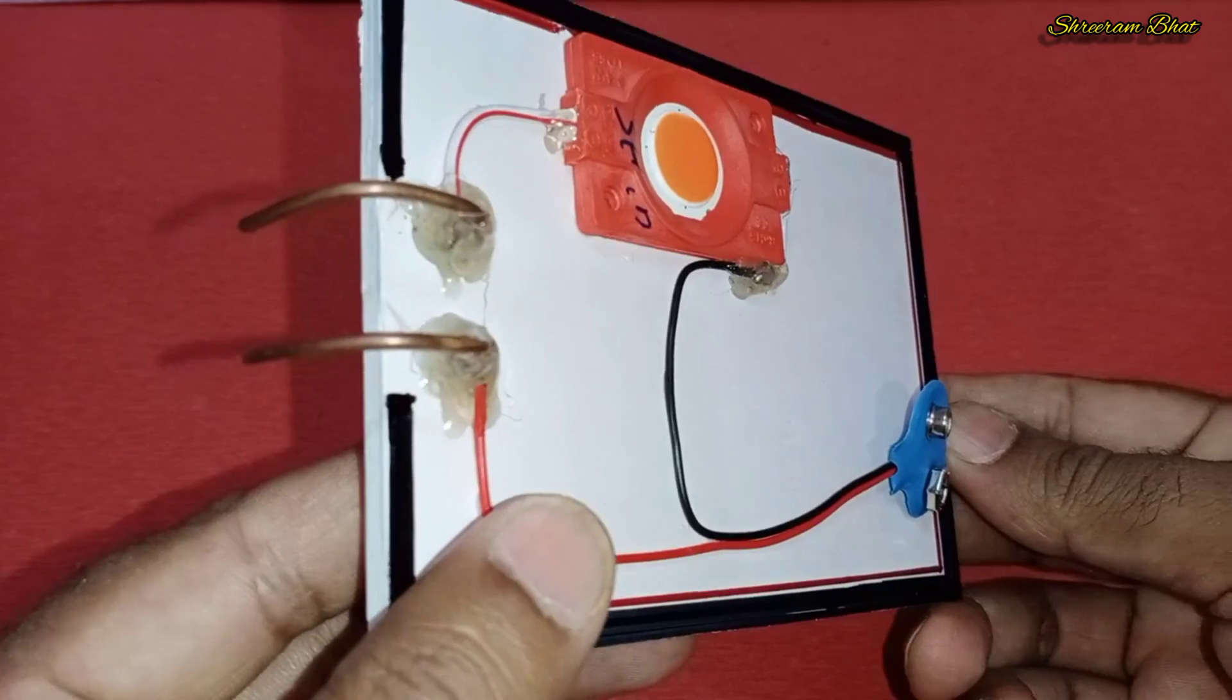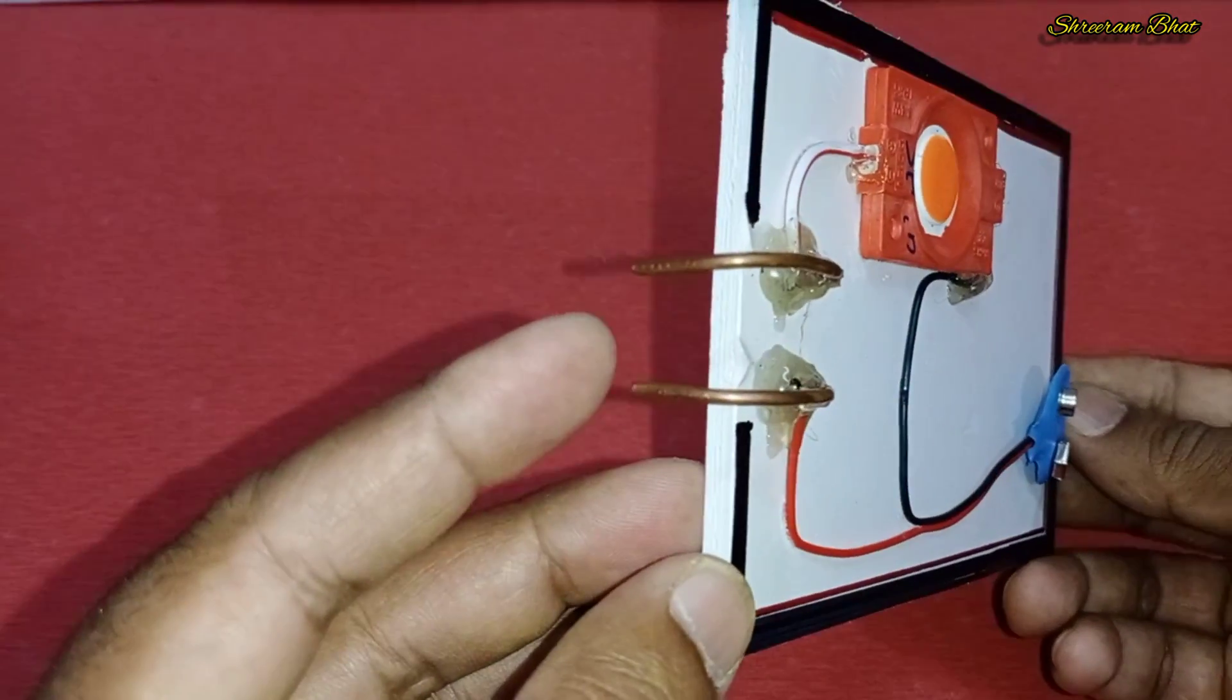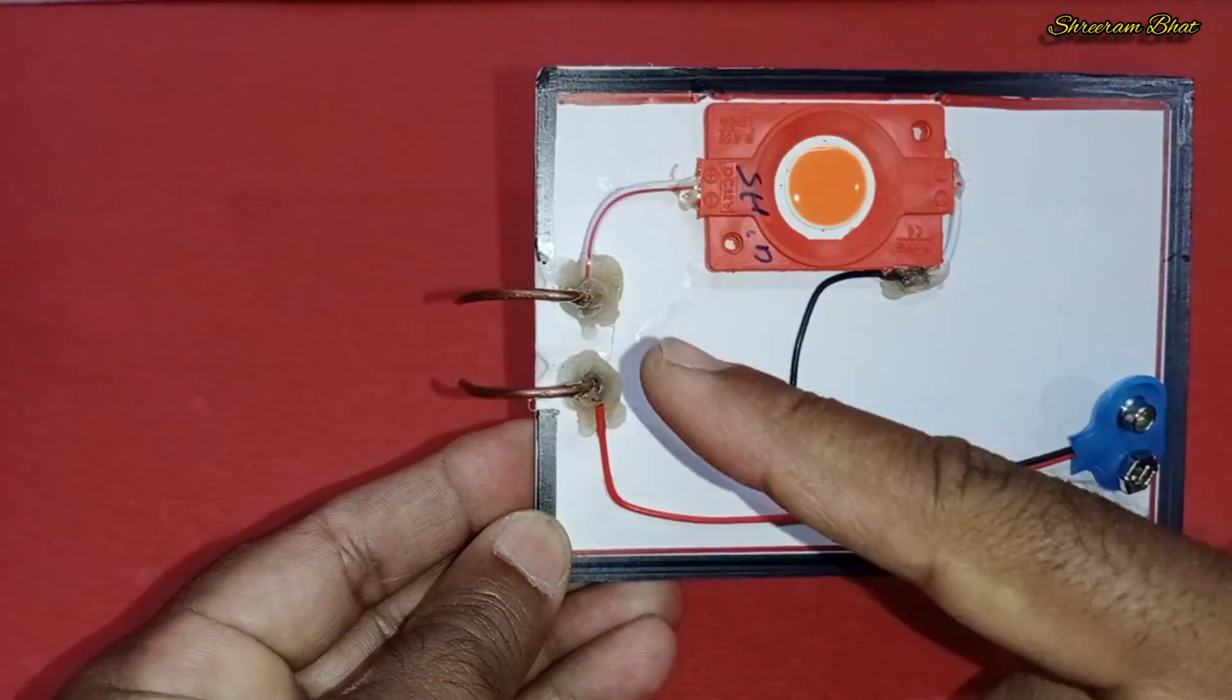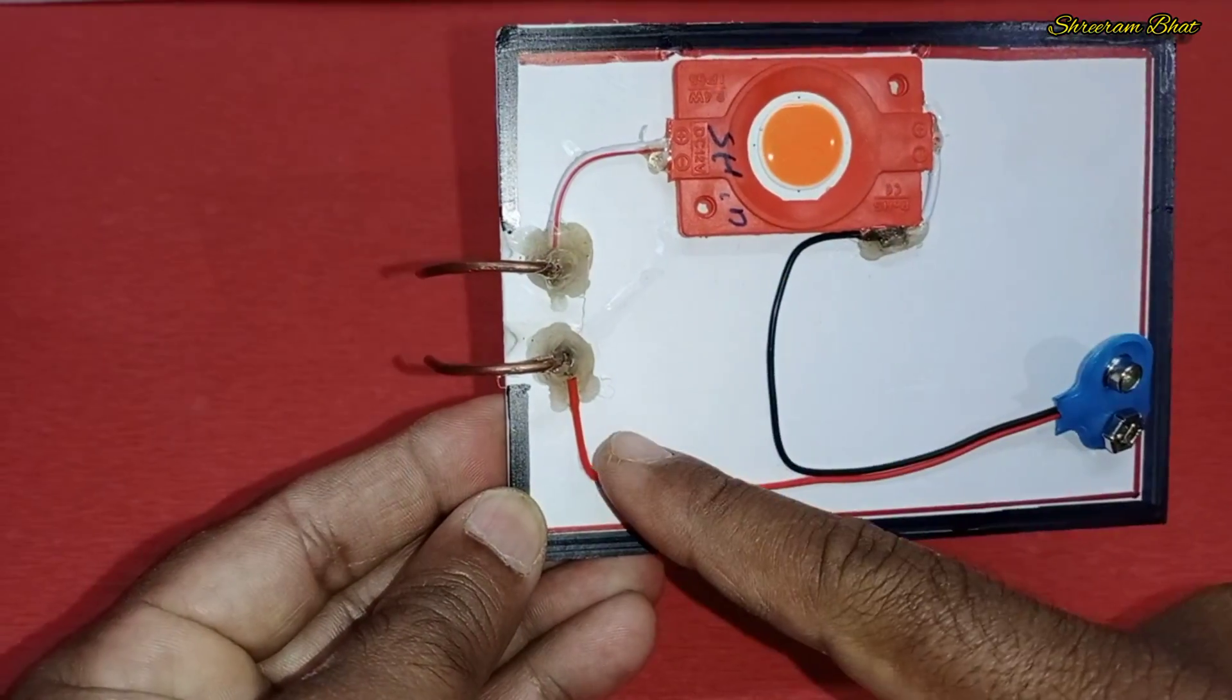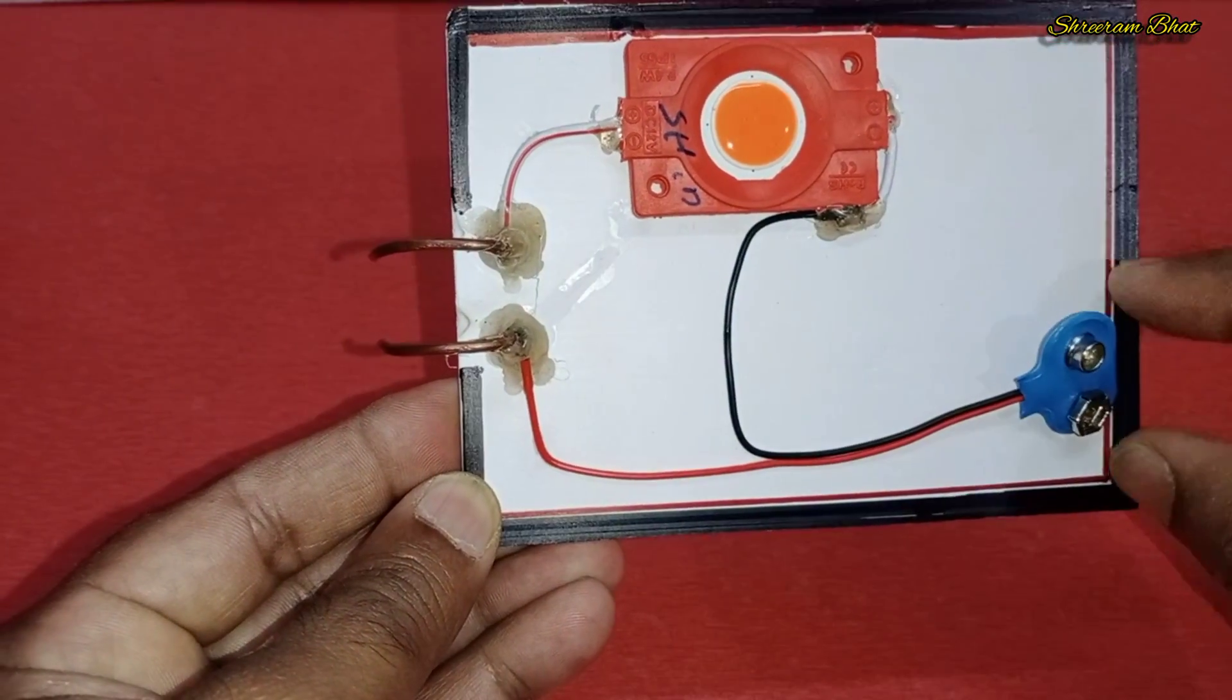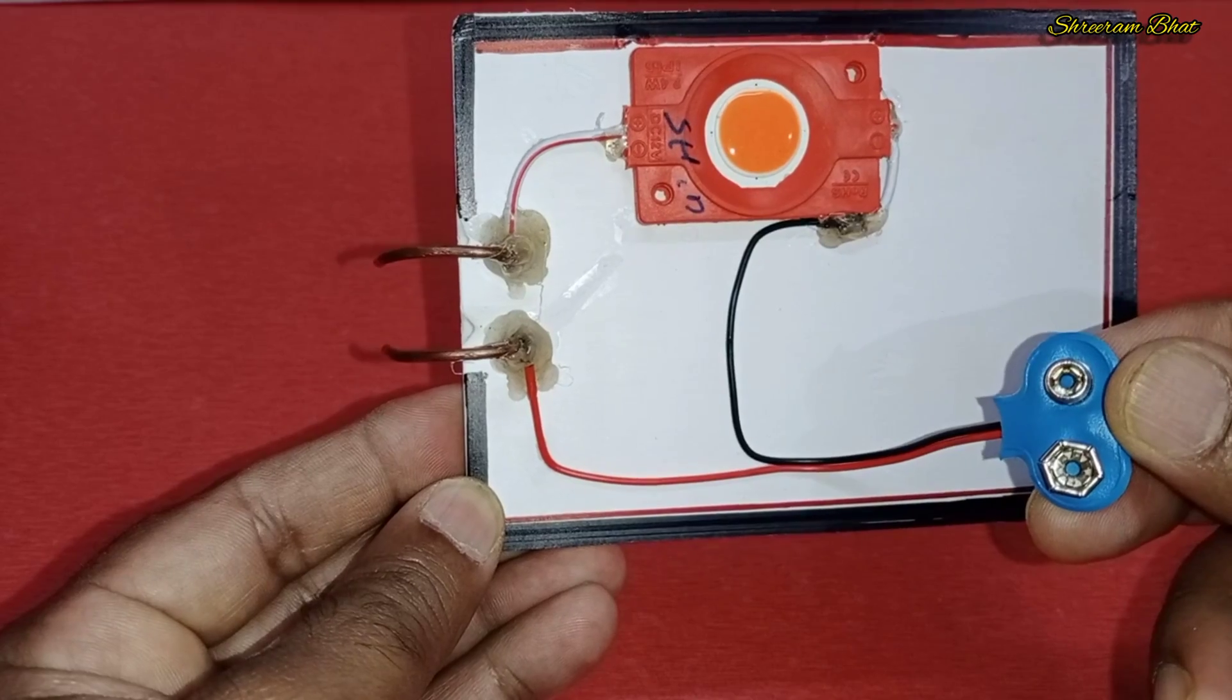This is made with a simple circuit, having two terminals of copper wire and an LED bulb connected in series. This is a battery cap.